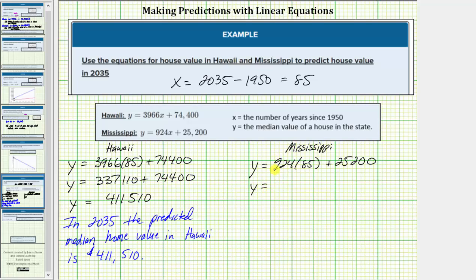So we have y equals—this product is equal to 78,540, and this sum is equal to 103,740.